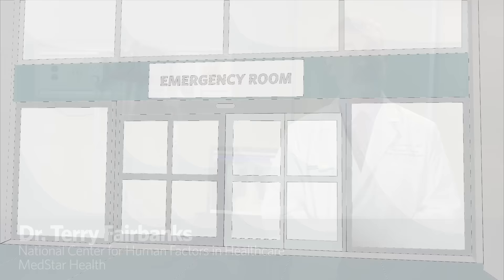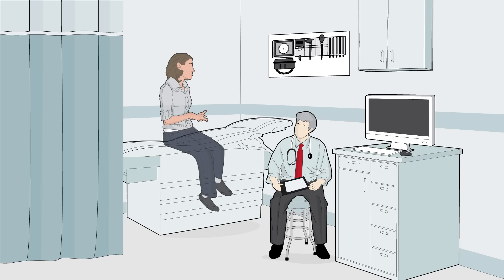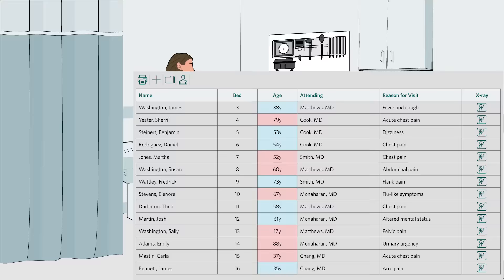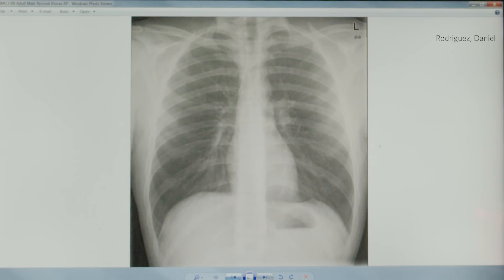When the doctor goes to see Martha Jones, they pull up the patient's electronic health record to look at the x-ray. The doctor actually pulls up Daniel Rodriguez's x-ray, thinking that it is Martha's. This x-ray appears normal, so the doctor sends Martha home.